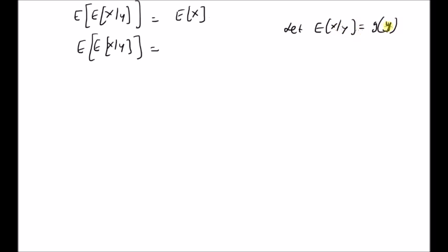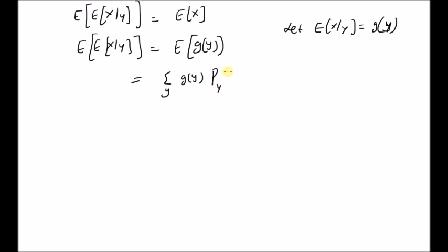So that means we have expectation of g(Y), which is a function of the random variable Y, equal to the summation over all values of y of the function g(y) multiplied by the marginal probability mass function p_Y(y). This is the definition of the expectation of a function of the random variable Y.